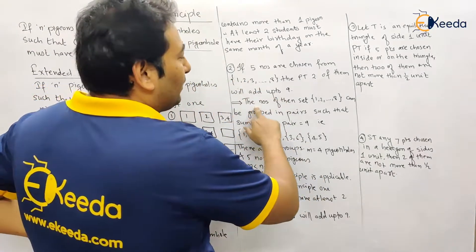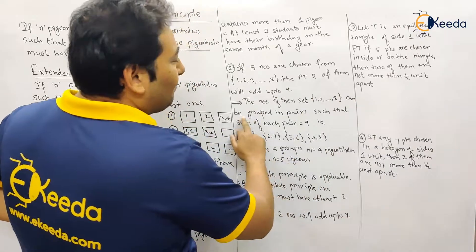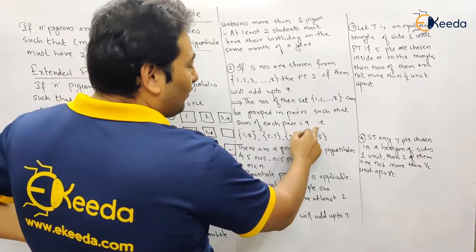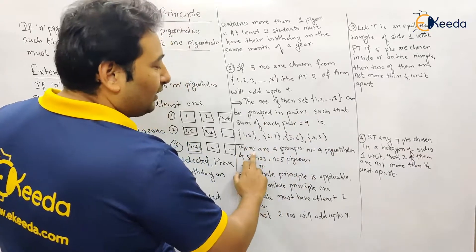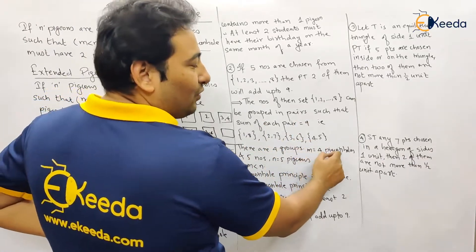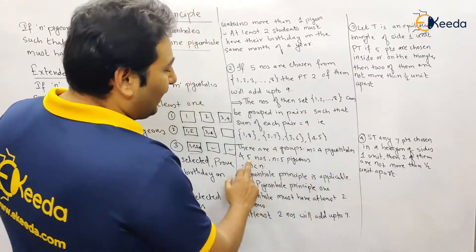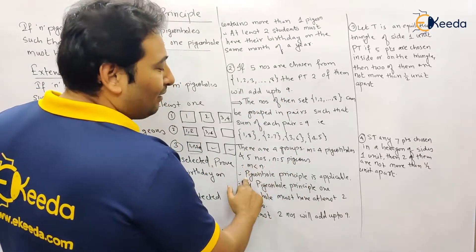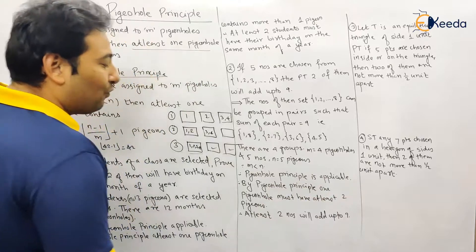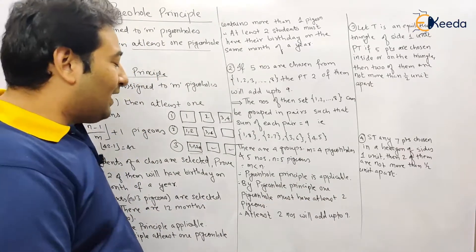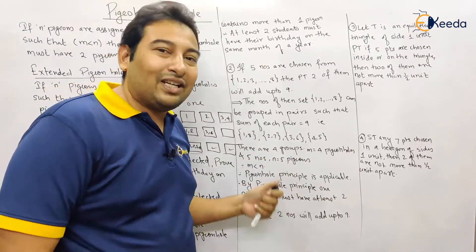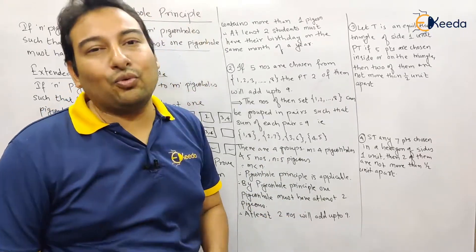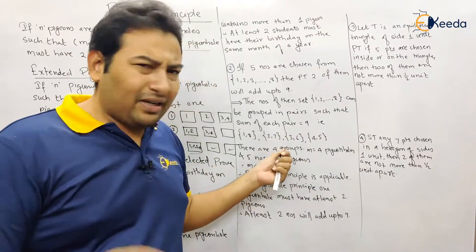The numbers from 1 to 8 can be grouped into pairs such that the sum of each pair equals nine. There are four such groups, so m = 4 pigeonholes, and five numbers are chosen, so n = 5 pigeons. Since m < n, by the Pigeonhole Principle, at least one pigeonhole must contain two pigeons. Therefore, at least two numbers will add up to nine. It's a bit tricky but the procedure is clear.